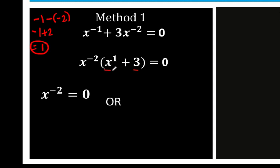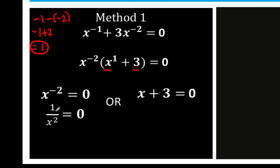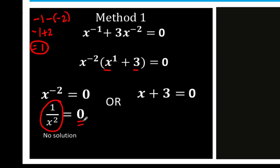For x raised to negative 2 equals 0, we rewrite this with a positive exponent as 1 over x squared equals 0. This fraction 1 over x squared can only equal 0 if the numerator is 0, because we cannot have a 0 in the denominator. Since our numerator is already 1, it is impossible for 1 over x squared to equal 0. Therefore, this left side is not a solution — we cannot find a value for x such that 1 over x squared equals 0, because division by 0 is not allowed.